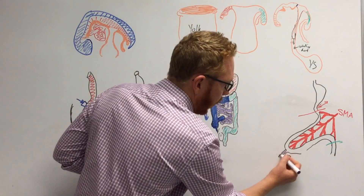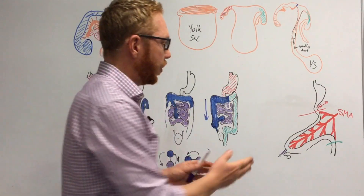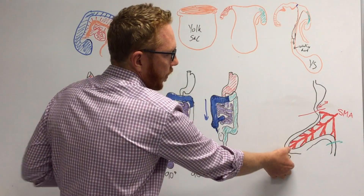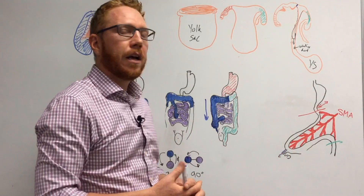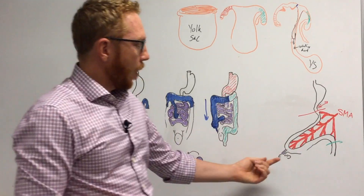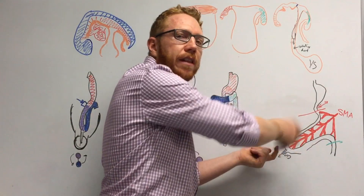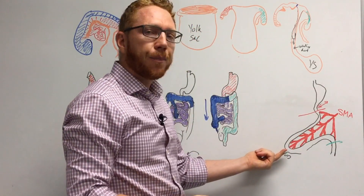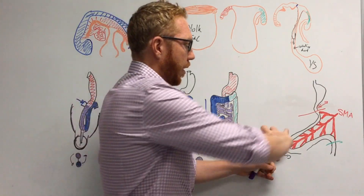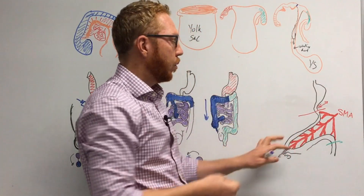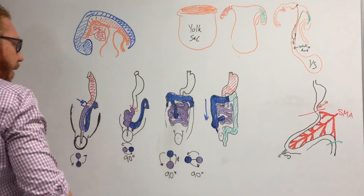Another clinical correlate: the vitelline duct sometimes remains patent, creating a fistula between the distal ileum and the anterior abdominal wall. It can also remain as a ligament around which the gut can twist, causing a volvulus — this is called Meckel's diverticulum. If the gut rotates around this persistent remnant it can cause ischemia and volvulus.